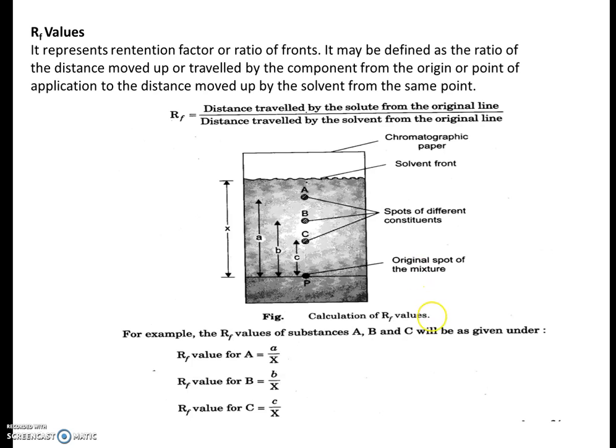So here you can see after sometime different... So for example, RF value of substances A, B, and C will be given under: RF value for A, that is distance traveled by A, that is small letter a, and distance traveled by the solvent, that is totally, that is X. So for B it is b by X, for C it is c by X.